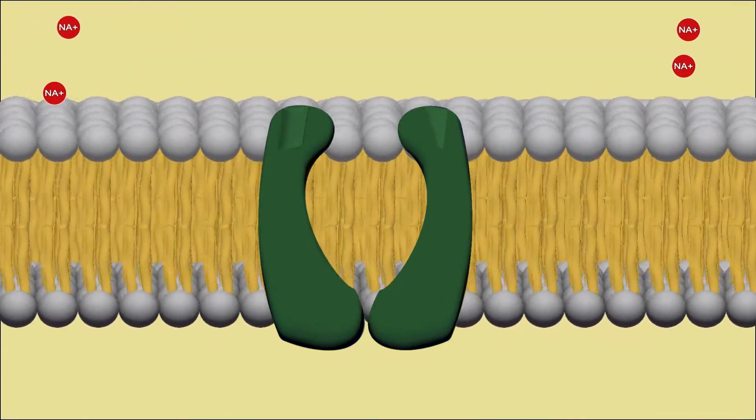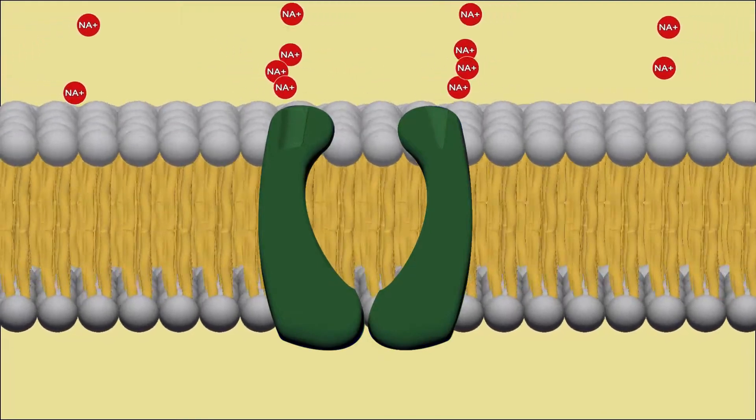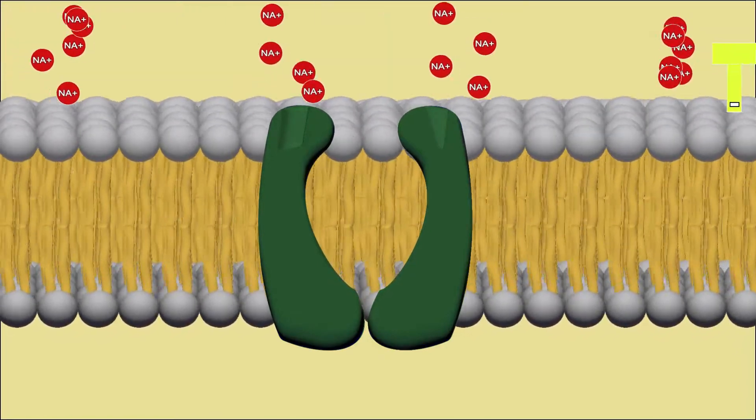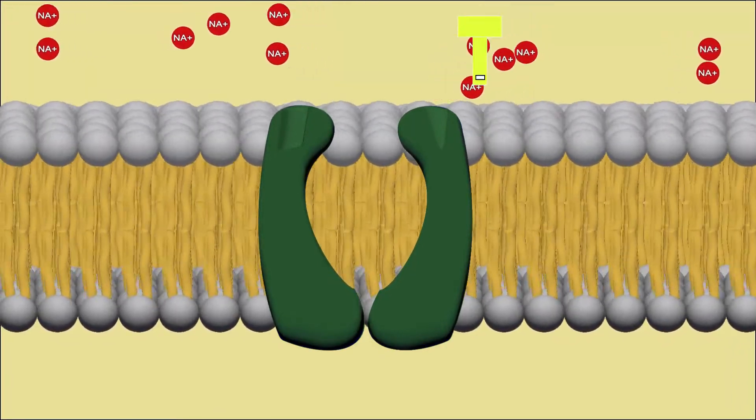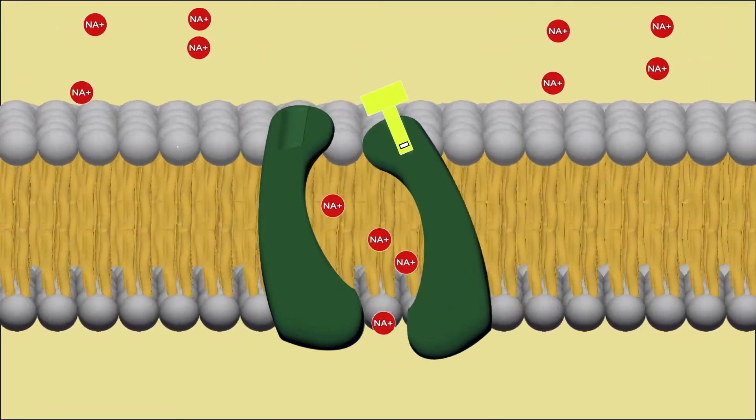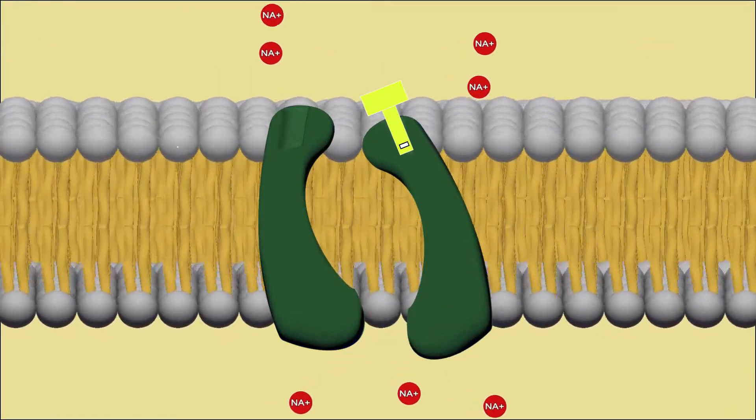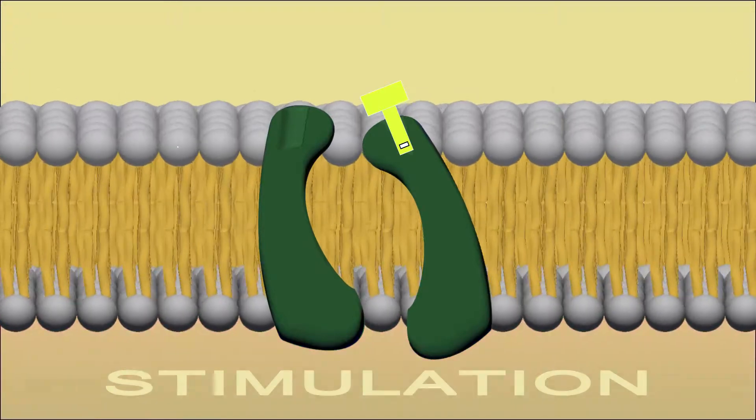And then this leads to a stimulatory response, causing fish to search for food. As you can see from the animation, binding of a neutral amino acid stimulates a response illustrated by the protein channel opening and allowing sodium to enter into the cell membrane, which results in an action potential, and hence stimulation.